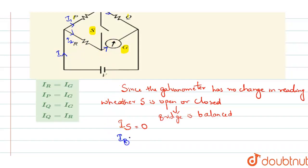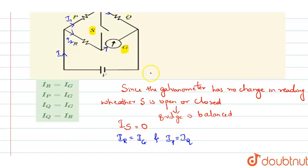So, Ir will be equal to Ig. And whatever current flows through P, the same current flows along Q also. So, Ip will be equal to Iq. Now, looking at the options, Ir is equal to Ig — so option 1 is the right answer.